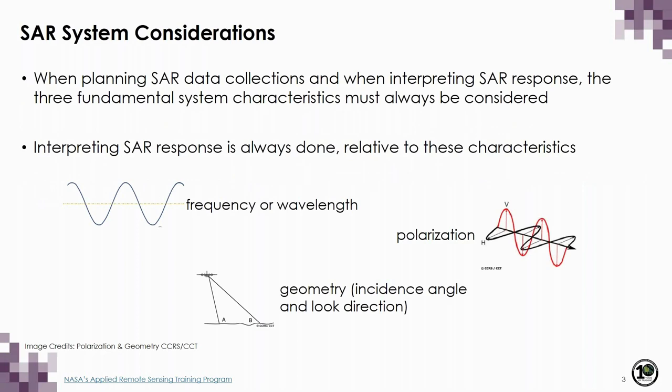Whether planning to acquire radar data or interpreting SAR responses, we must always keep in mind three fundamental SAR system characteristics: the SAR frequency or wavelength of the sensor, the polarizations at which sensors are transmitting and receiving energy, and the geometry — both the incidence angle and look direction of the SAR sensor. Interpreting radar responses is always done relative to these three characteristics.